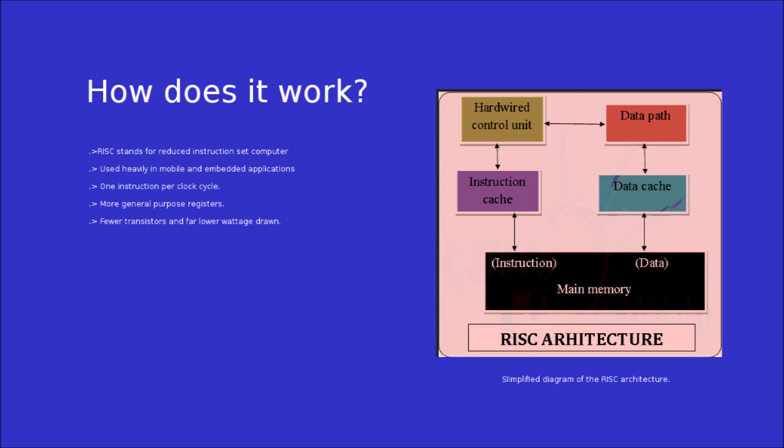A nice bit of trivia: the first ARM chip on a phone was in the Nokia 6110. ARM is a RISC-based architecture — RISC stands for Reduced Instruction Set Computer. It's used heavily in mobile and embedded applications, with less power draw and less heat generated. Unlike x86, it only completes one instruction and one operation per clock cycle.